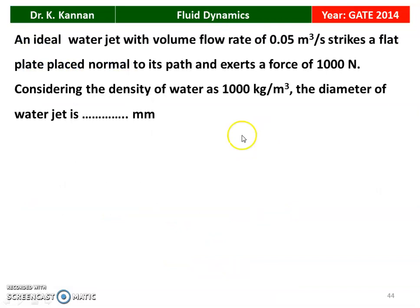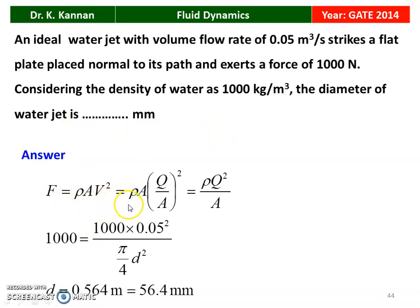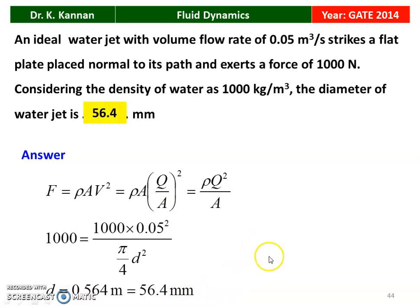Next question from the 2014 question paper. An ideal water jet with a volume flow rate of 0.05 m³/s strikes a flat plate placed normal to its path, exerting a force of 1000 N. Given density of water = 1000 kg/m³, find the diameter of the water jet. F = ρ·Q²/A. Substituting: 1000 = 1000×(0.05²)/[(π/4)·D²]. Solving: D = 0.0564 m = 56.4 mm.